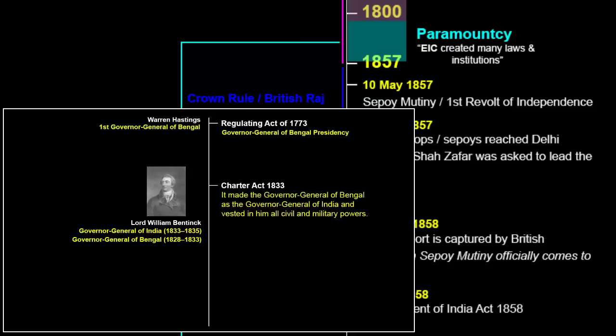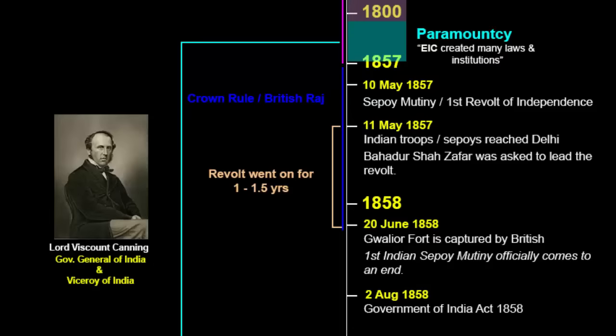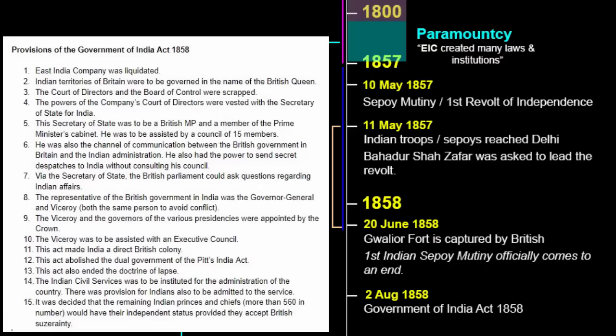Before 1833, there was only a Governor of Bengal Presidency, also called the Governor General of Bengal, since the British ruling journey started from the Bengal region. William Bentinck became the first Governor General of India after the Charter Act of 1833. And after 1858, with the passing of the Government of India Act 1858, Viscount Canning became the first Viceroy of India. To be clear, Viceroy and Governor General are essentially the same role.